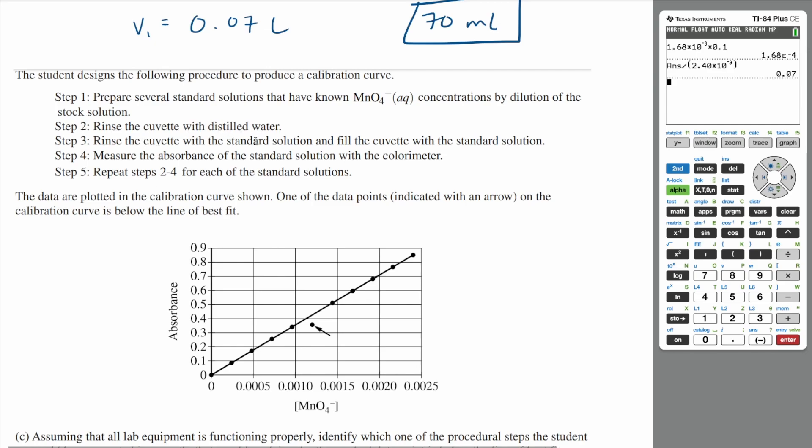Step three: rinse the cuvette with the standard solution and fill the cuvette with the standard solution. Step four: measure the absorbance of the standard solution with the colorimeter. Step five: repeat steps two to four for each of the standard solutions.